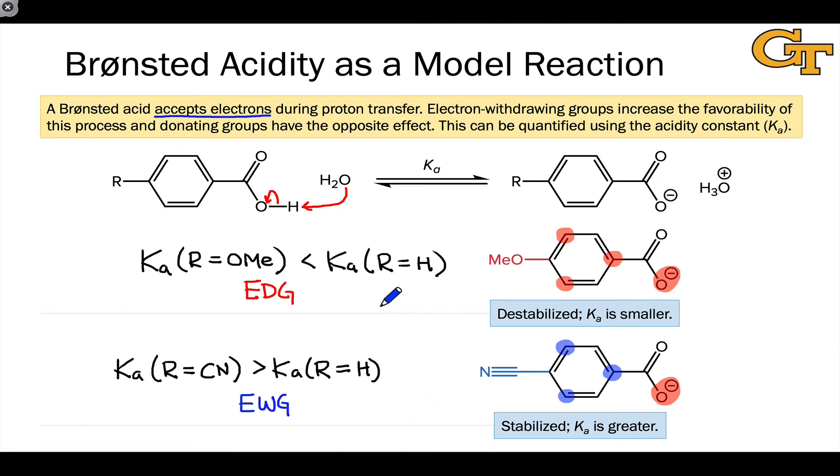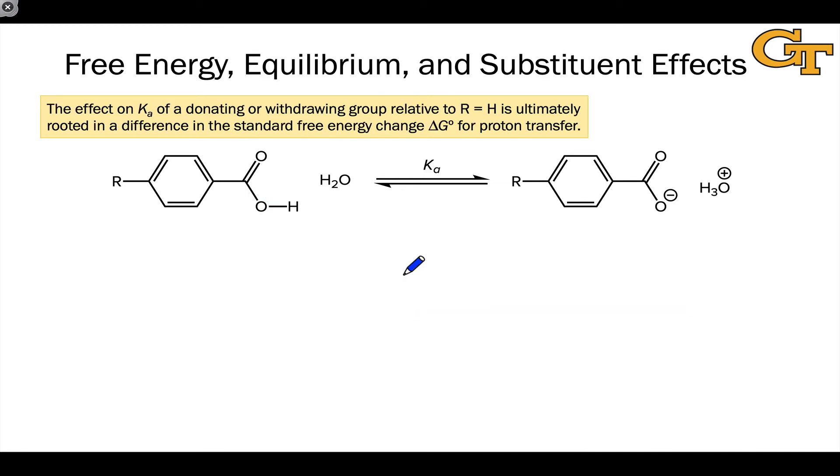And equivalently, we can define an electron withdrawing group as any group that increases the Ka of benzoic acid when substituted in a para position. And again, here we're using R equals H as our standard for increasing or decreasing so that H is neither electron donating nor withdrawing. It makes sense to put H at the middle of the scale since it's unsubstituted. And these Ka values are measured. And so the last important point to make is that this entire idea of identifying a group as donating or withdrawing is really grounded in the measurement of the Ka values.